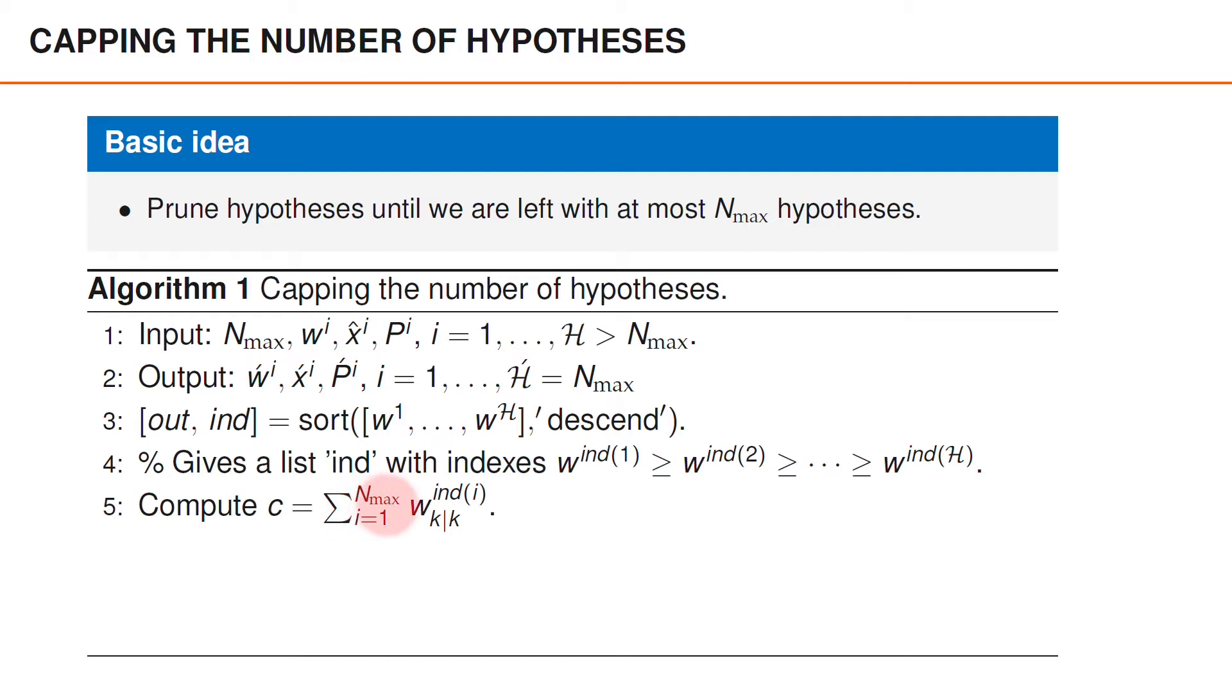We do that by summing up the weights of the components that we intend to keep. Finally, we go through the n-max first hypothesis in the list ind, and store the parameters for those hypotheses in the new variables w-acute, x-acute and p-acute, where the weights are also divided by c to ensure that they become normalized. By the way, if you want, you can instead ignore computing c and normalize the weights w-acute afterwards, since this will give the same result.